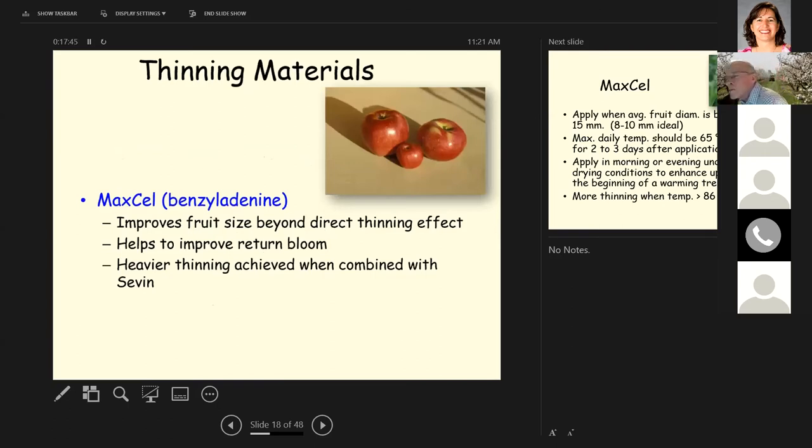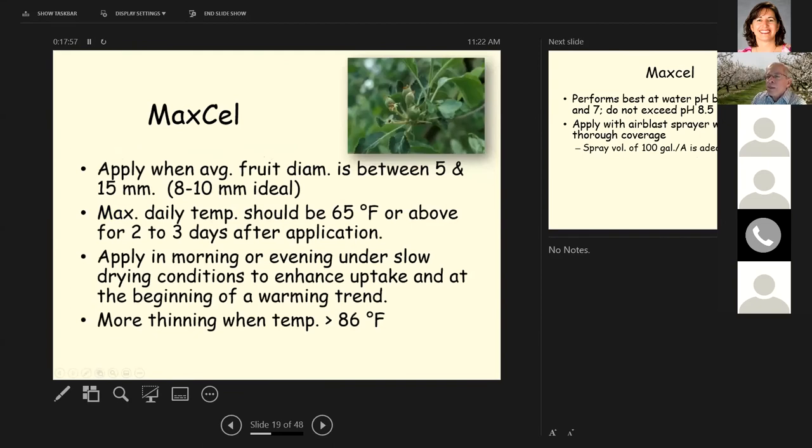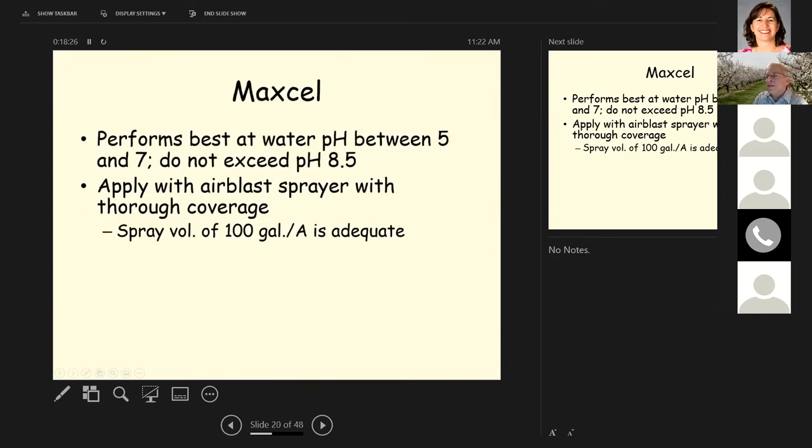So it improves fruit size beyond just the direct thinning effect. And it also helps to improve return bloom. Heavier thinning is achieved when you combine this with seven as we've noted. Typically you apply this when the average fruit diameter is between five and 15 millimeters, eight to 10 millimeters is ideal. As we've said before, maximum daily temperature should be 65 degrees Fahrenheit or above for two to three days after application, ideally. Apply in the morning or the evening under slow drying conditions to enhance uptake. And at the beginning of a warming trend, you get more thinning when the temperature is above 86 degrees Fahrenheit.